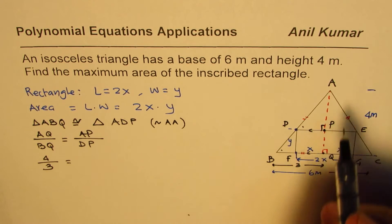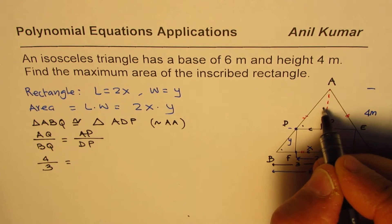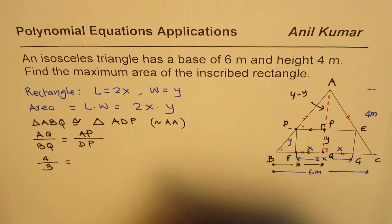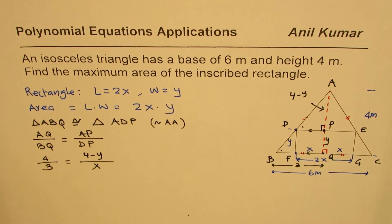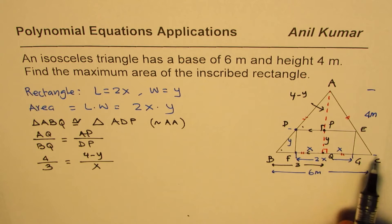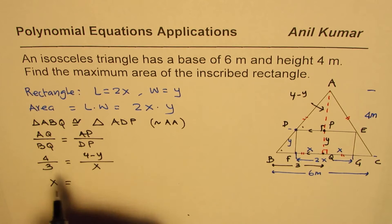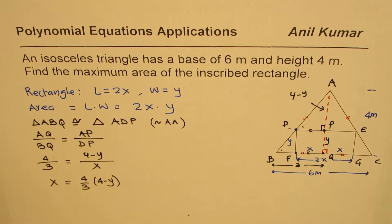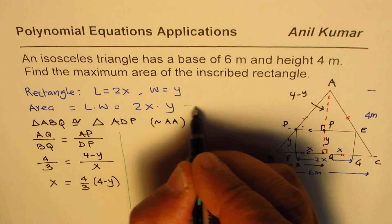Since y is the width of the rectangle and the total height is 4, AP will be 4 minus y. And DP equals x, since we've taken the length of the rectangle as 2x — x on each side from symmetry. This equation lets us write x in terms of y. Cross-multiplying: x = (3/4)(4 − y).